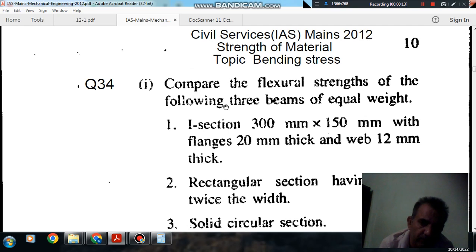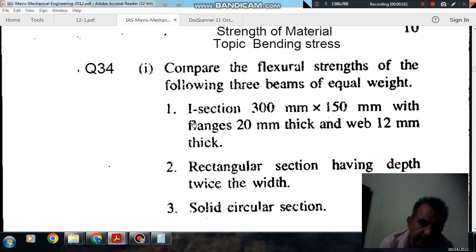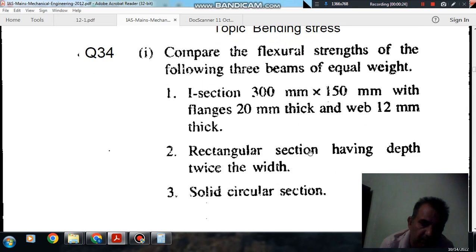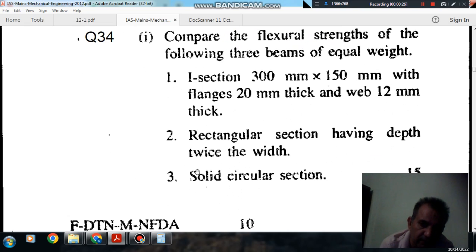Compare the flexural strength of the following three beams of equal weight. First, I-section 300 mm by 150 mm with flanges 20 mm thick and web 12 mm thick. Two, rectangular section having depth twice the width. Three, solid circular section.